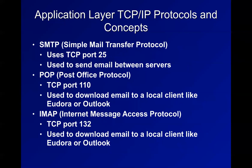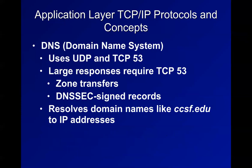SMTP sends email from server to server. To receive email from a server into an email client like Outlook, you use POP or IMAP - though most people now use webmail like Gmail. DNS is where you look up alphabetic domain names and turn them into IP addresses. There are a ton of DNS attacks. The latest hotness is DNS over HTTPS (DoH), which is the most popular way to improve privacy. Everything you do in plain text DNS is visible to anyone on your network.